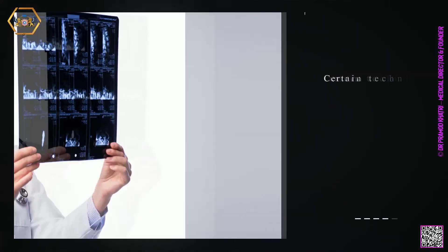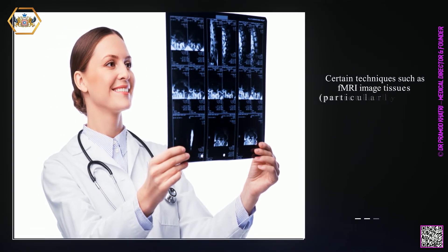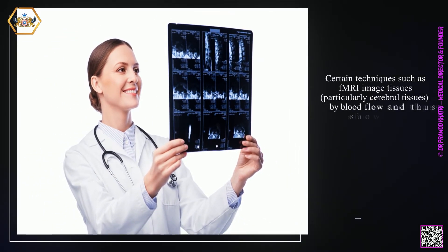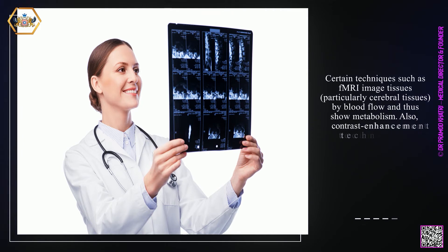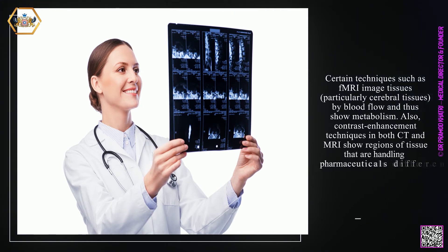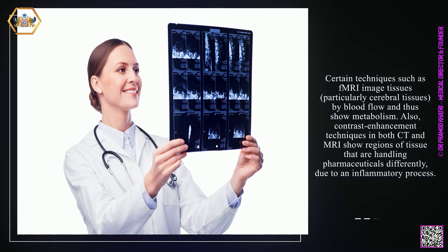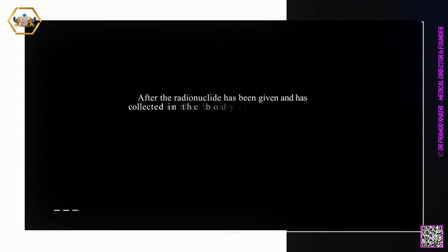Certain techniques, such as fMRI, image tissues — particularly cerebral tissues — by blood flow and thus show metabolism. Also, contrast enhancement techniques in both CT and MRI show regions of tissue that are handling pharmaceuticals differently due to an inflammatory process. After the radionuclide has been given and has collected in the body tissue under study, radiation will be given off.